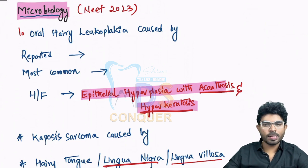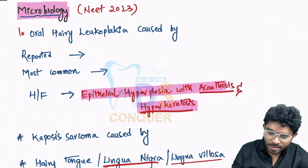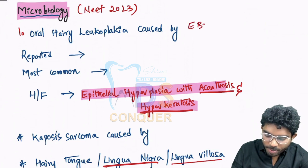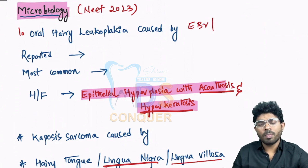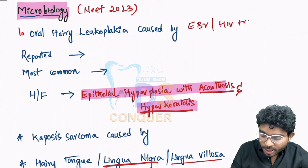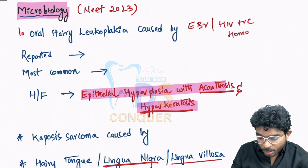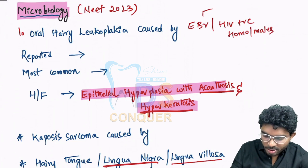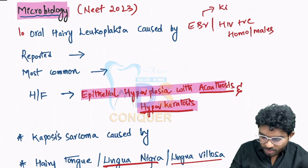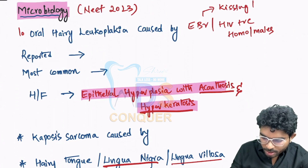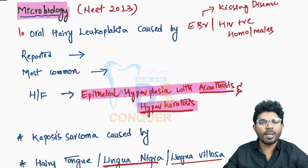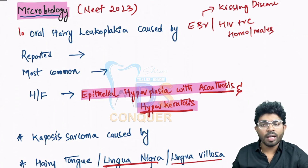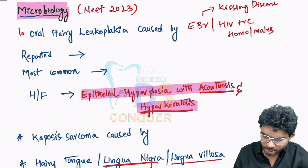The first question: oral hairy leukoplakia is caused by which of the following? The answer is EBV. It is also most commonly reported with HIV positive homosexual males. Most of us are familiar that EBV is the main causative organism of kissing disease — due to deep kissing — which is called glandular fever. The diagnostic tests useful for glandular fever are the monospot test and Paul-Bunnell test.